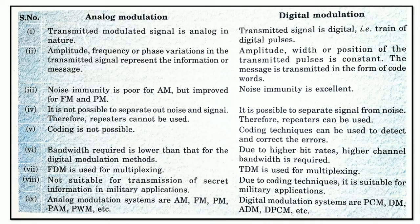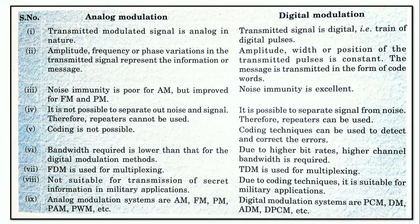In analog modulation, noise immunity is poor for amplitude modulation, but it is improved in frequency modulation and phase modulation. In digital modulation, noise immunity is excellent. In analog modulation, it is not possible to separate noise from the signal, so if repeaters are used, noise is also amplified along with the original signal.